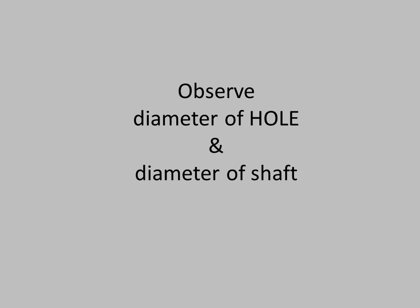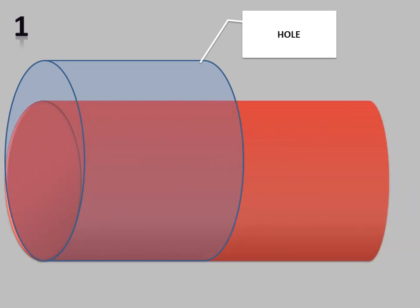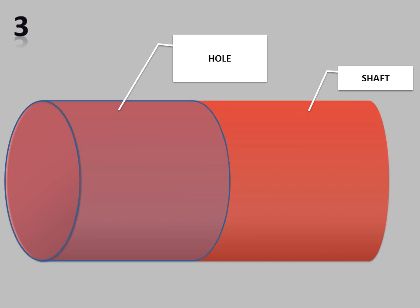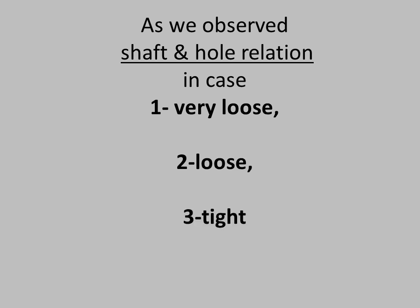Observe the diameter of the hole and diameter of the shaft. In Case 1, this is the hole and this is the shaft. Now observe the changes in Case 2, and again observe in Case 3. As we observe, the shaft and hole relation in Case 1 is very loose, in Case 2 it is loose, and in Case 3 it is tight.